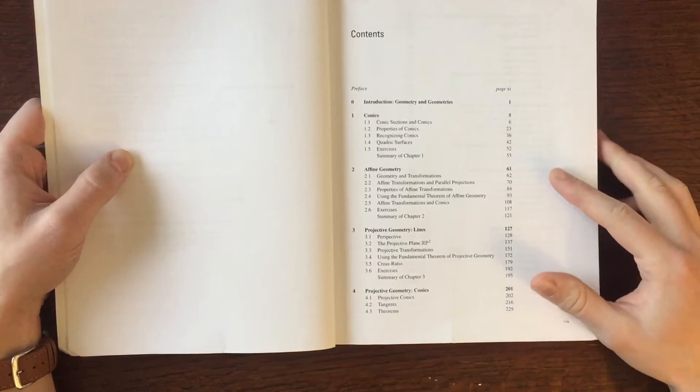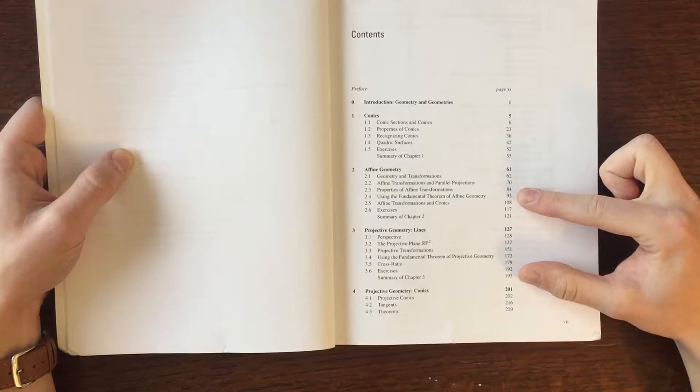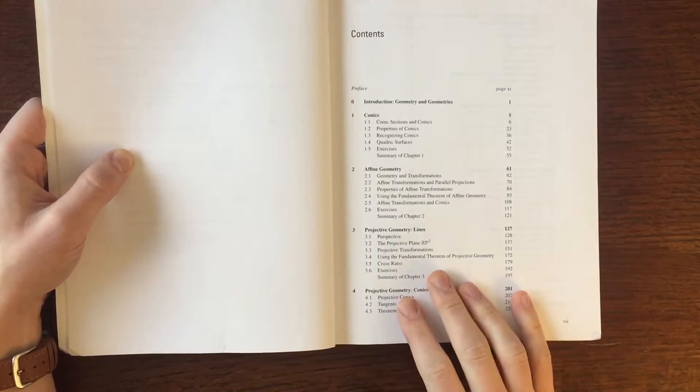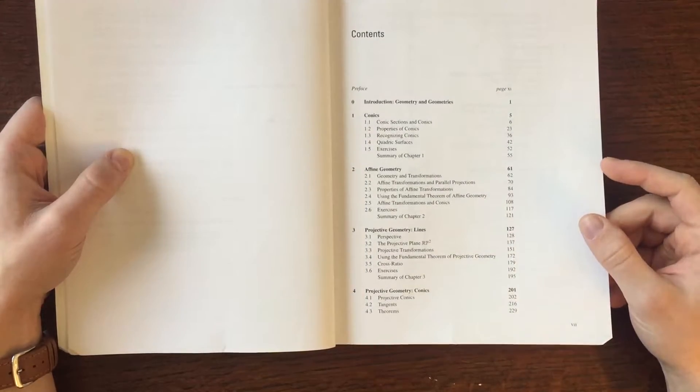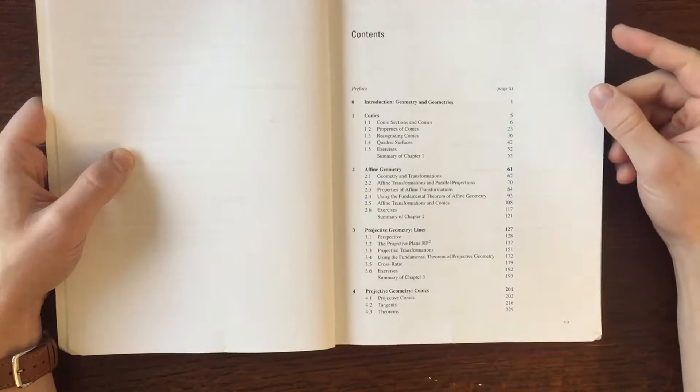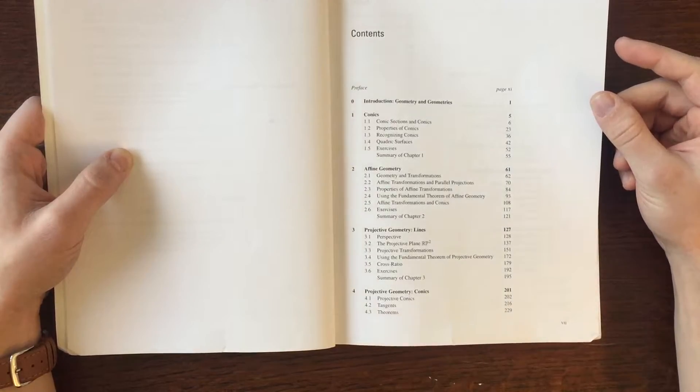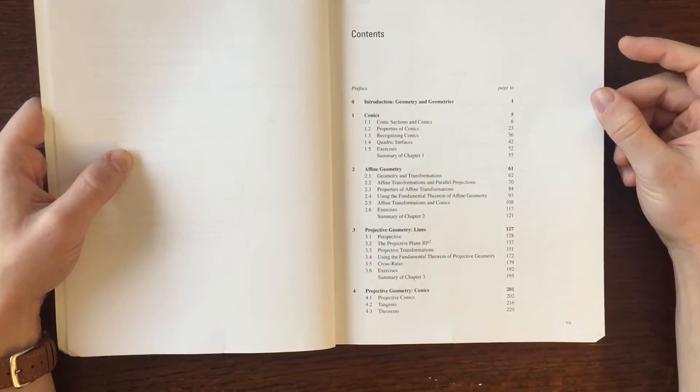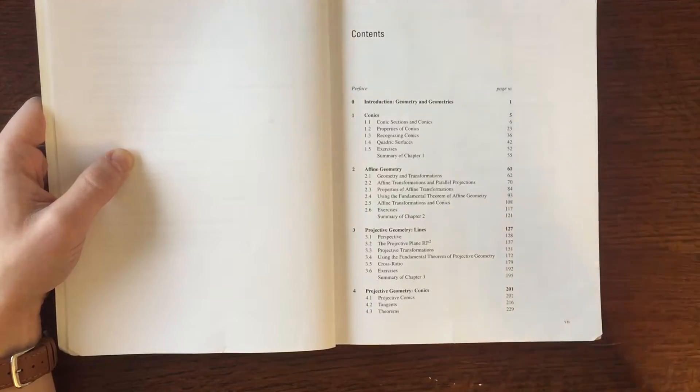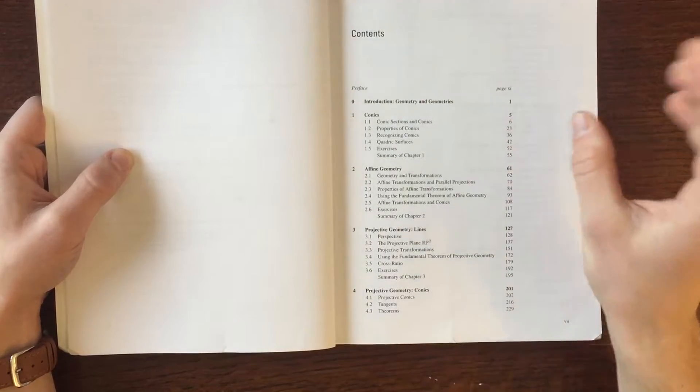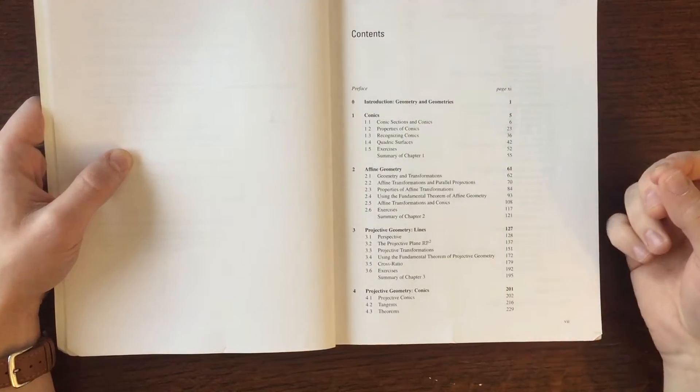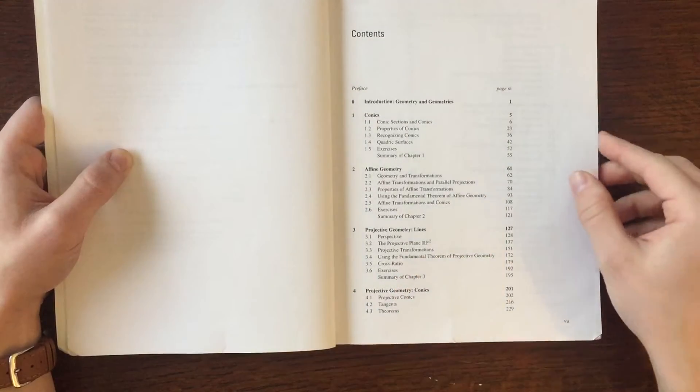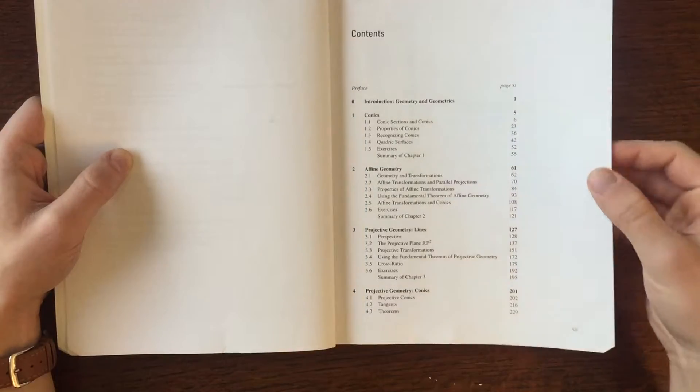It goes on to talk about affine geometry and projective geometry. Projective geometry is really interesting because that's the type of geometry used in many paintings and portraits today. If you ever took an art class, you might have talked about a vanishing point off at infinity and all lines going to or intersecting at that vanishing point. That's the type of math we actually talk about.